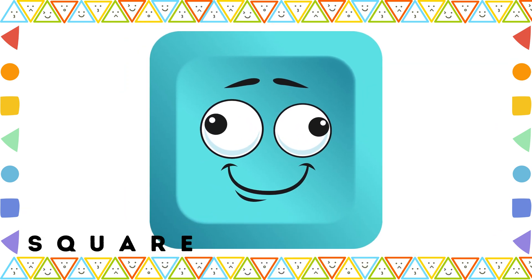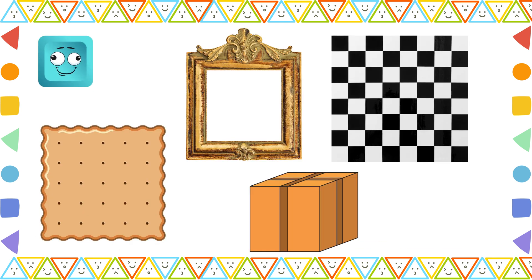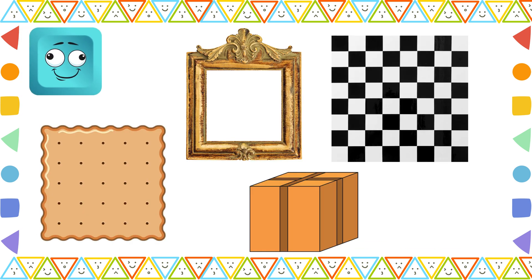This is square. It has four equal sides and four right angles. Biscuit, photo frame, chessboard, and box.